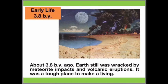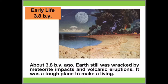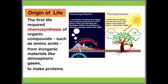Around 3.8 billion years ago, Earth was still wracked by meteorite impacts and volcanic eruptions — still a tough place to make a living. Eventually, life evolved shortly after the bombardment ended. It was believed that simple organic molecules may have formed in the ocean. The first living things were probably simple bacteria that required chemosynthesis of organic compounds. Chemosynthesis is a process by which organisms produce food, just like photosynthesis for plants, except chemosynthesis runs on chemical energy while photosynthesis is powered by sunlight.